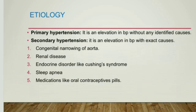Secondary hypertension is the elevation in blood pressure with an exact, identifiable cause. Examples include congenital narrowing of the aorta, and endocrine disorders.